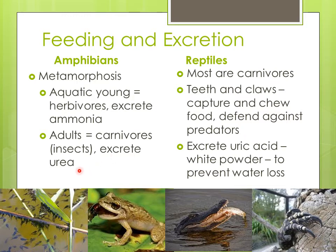Adult amphibians excrete urea, which is the nitrogenous waste that we also excrete. It's not as toxic as ammonia, so it can build up a bit — they can hold it in their bladder and then get rid of it. By not urinating as much, they don't lose as much water, since they're on land.